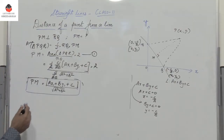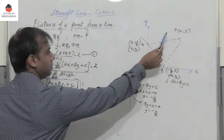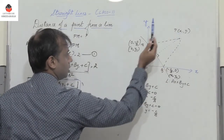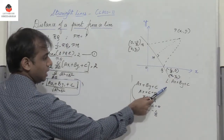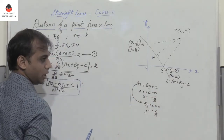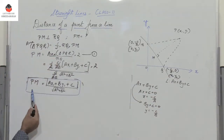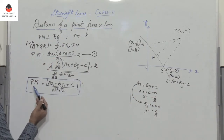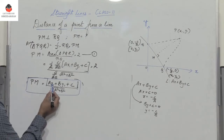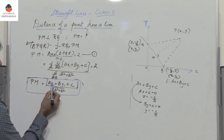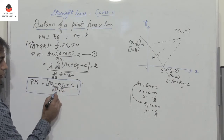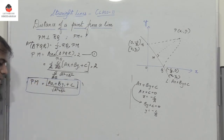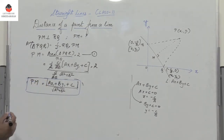This is the important formula to remember: the distance of a point P with coordinates (x1, y1) from the line Ax + By + C = 0 is given by |Ax1 + By1 + C| / √(A² + B²).